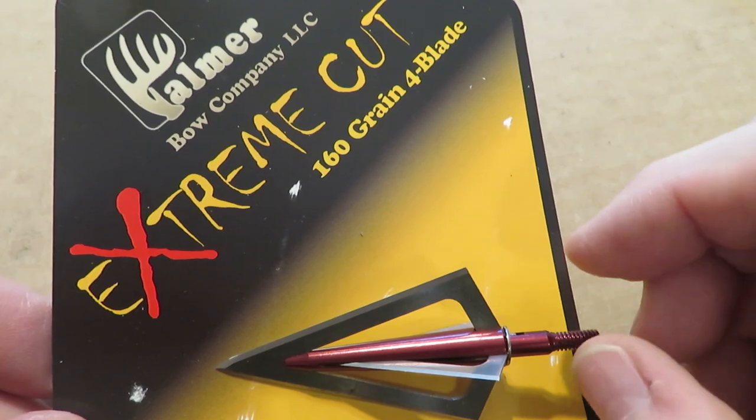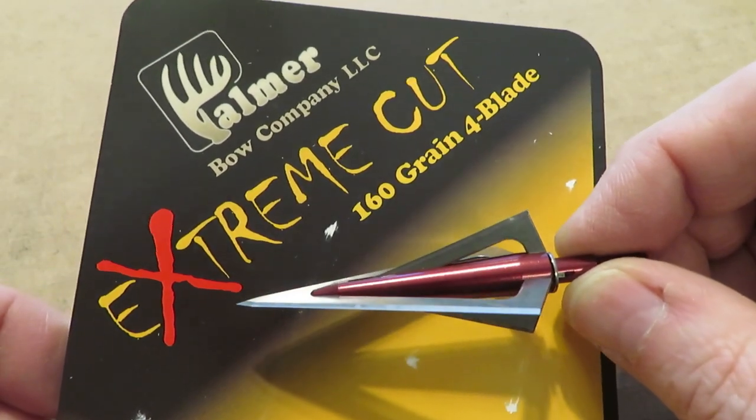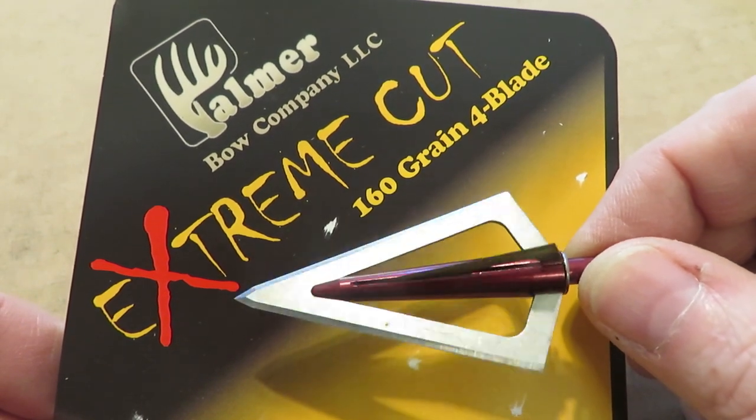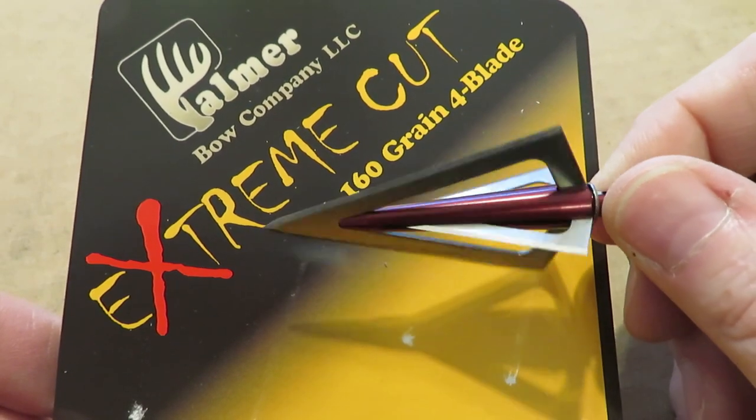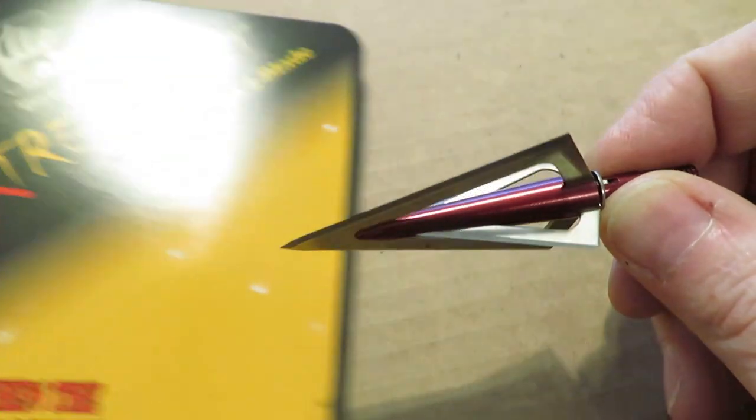Welcome back bow hunters, this is Ron with Stay Sharp. In this video we're going to be looking at the Palmer Extreme Cut 160 grain broadhead. This is a huge head, and if it looks familiar to you, that's because it is.